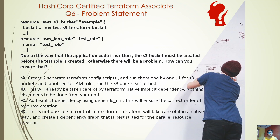Implicit dependency normally works in 90% of the cases, but in this case it will not work because I am not referencing any parameter of this S3 bucket in this IAM role. If I had referenced it, then obviously Terraform would have understood that the S3 bucket needs to be created first and the IAM role should only be created after that. So this is not the solution.